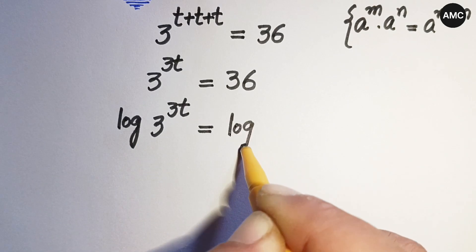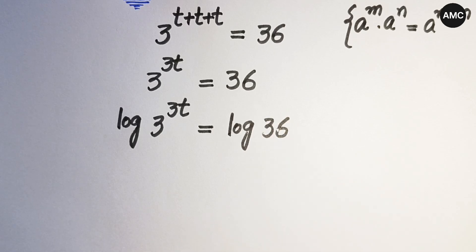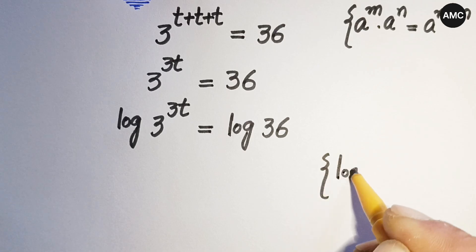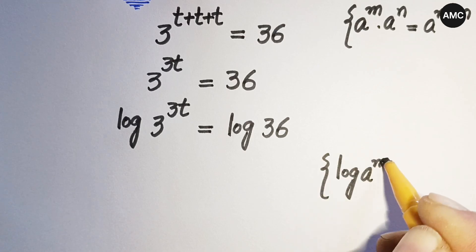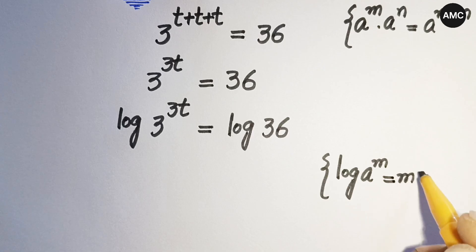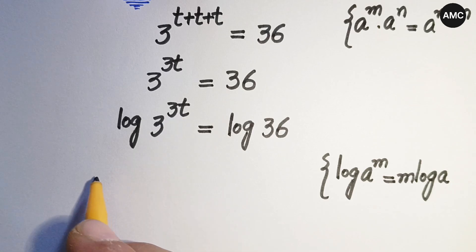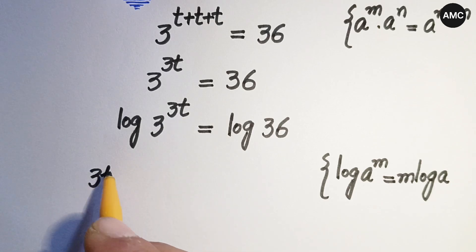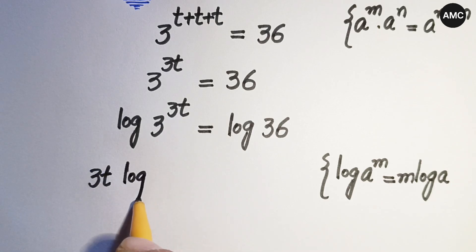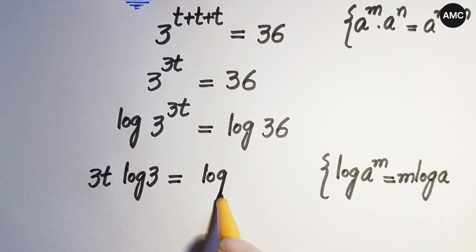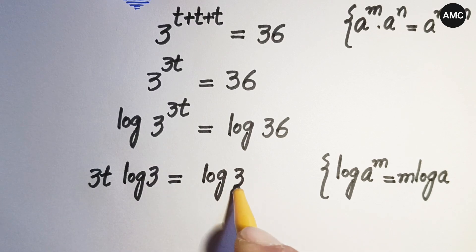Applying the logarithm law — log of a to the power m equals m times log a — we shift the exponent 3t down, giving us 3t times log 3 is equal to log 36.